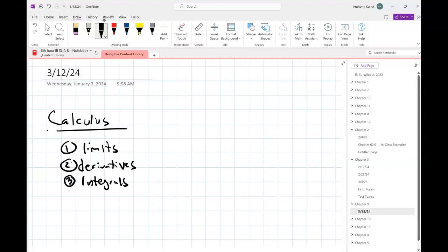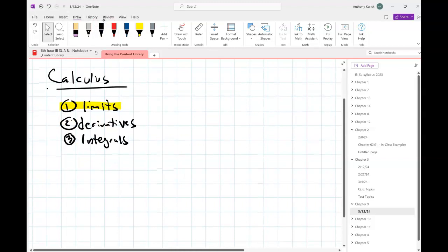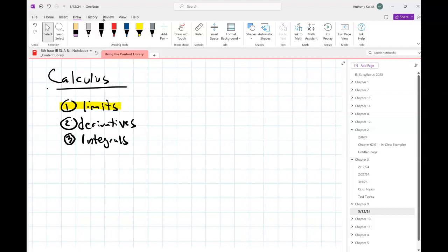Everybody okay? So today we're gonna start with limits, and one of the very first ideas or stories that you get introduced to anytime anybody talks about limits is something called Zeno's Paradox.